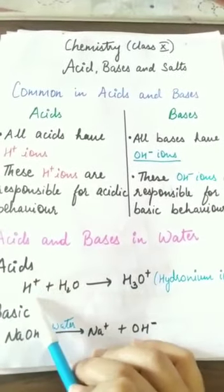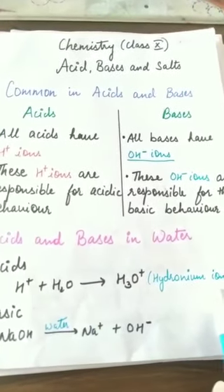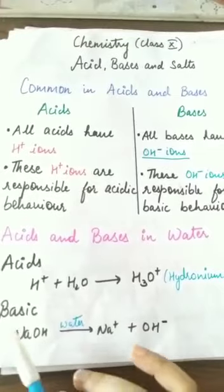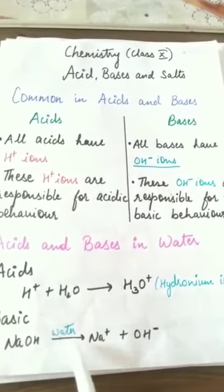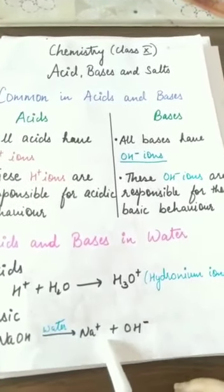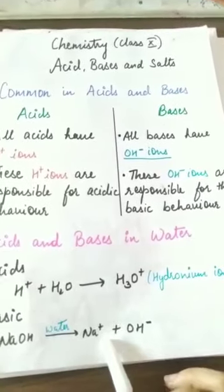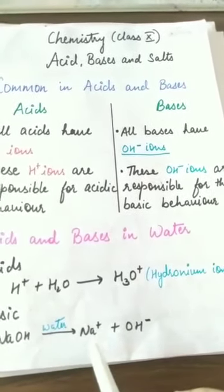Next is basic. When this is a base NaOH and when we add water to the base, it breaks down into positive and negative ions: sodium is positive ion and hydroxide is negative ion. It breaks down into sodium positive and hydroxide negative ions.